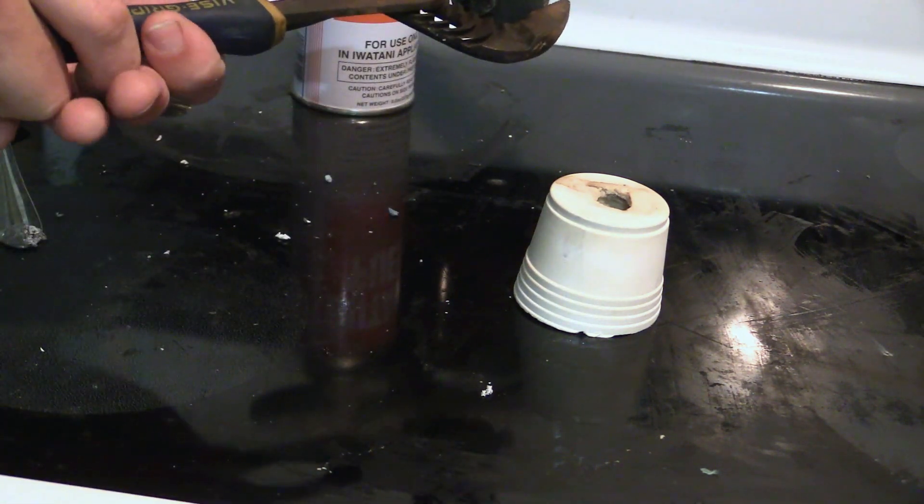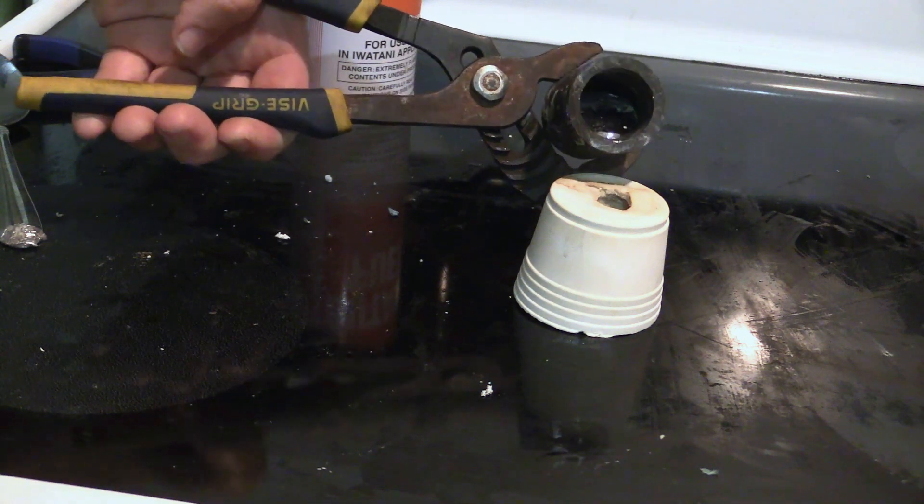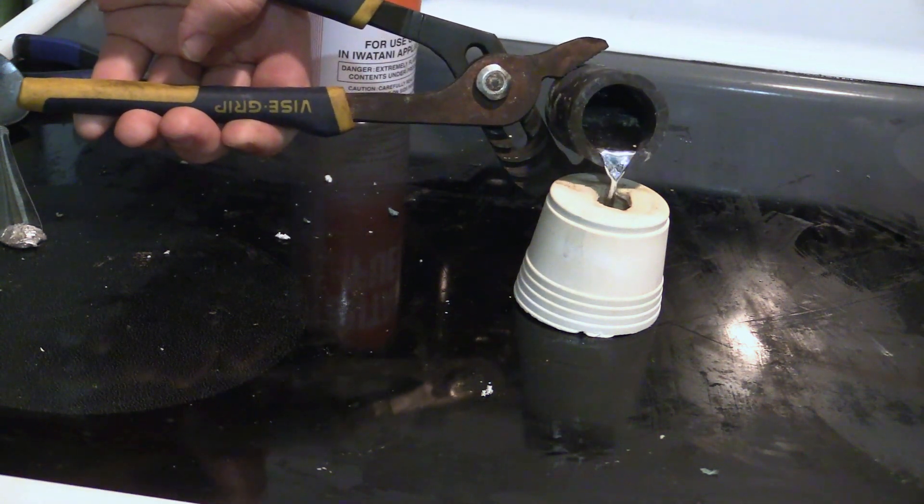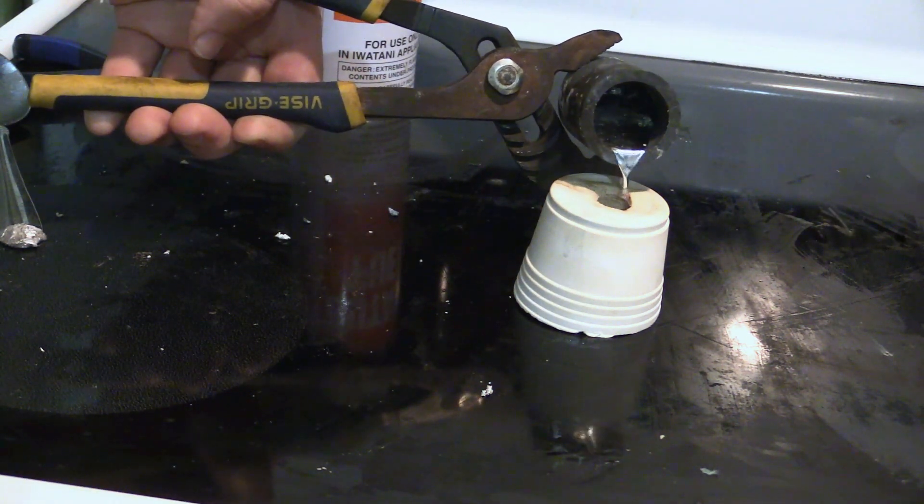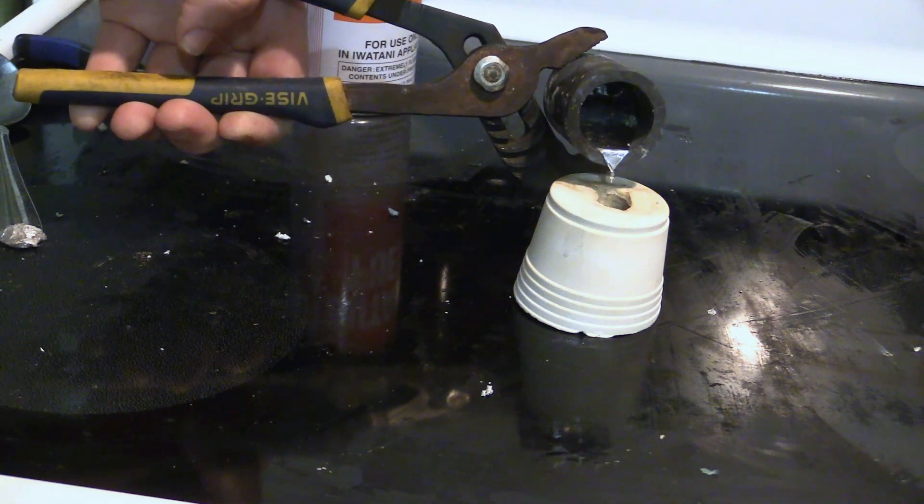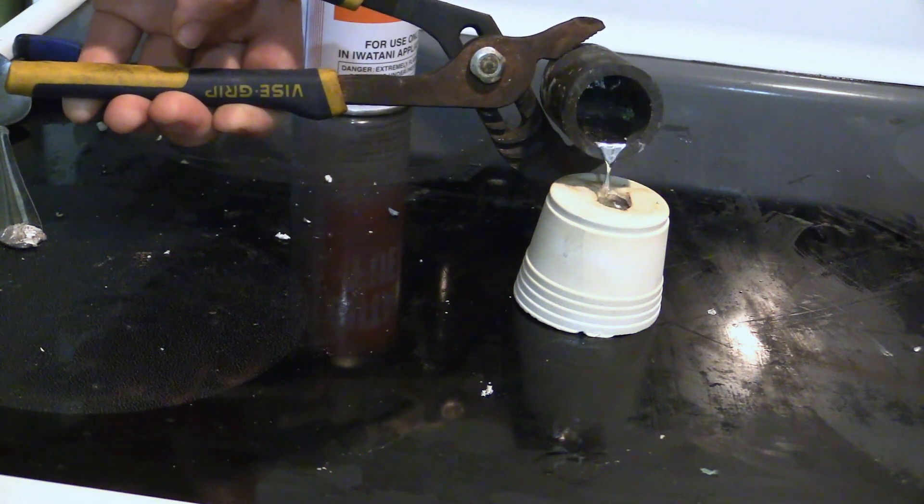Carefully pour the metal into the plaster mold. Definitely wear eye protection and you should also wear heat protection to your body and hands. The metal can splatter and cause very serious burns.